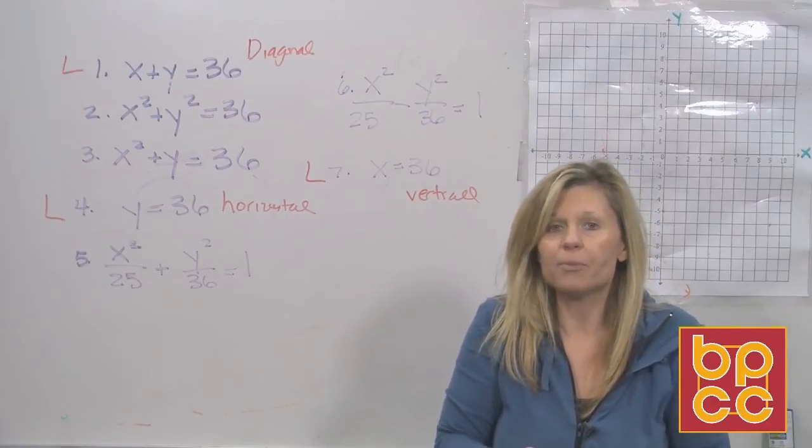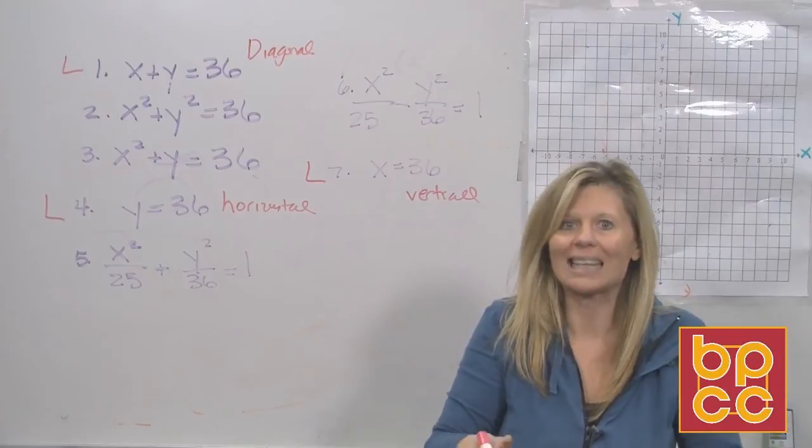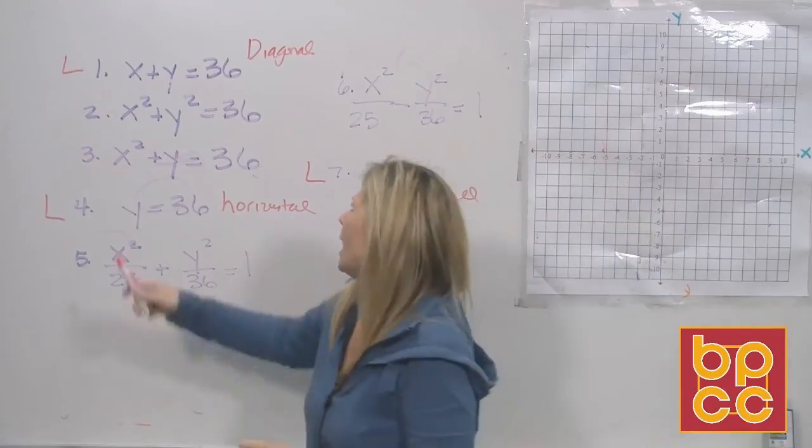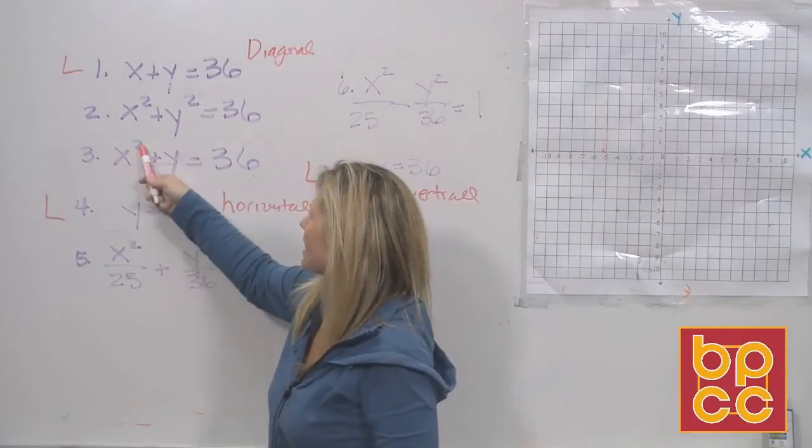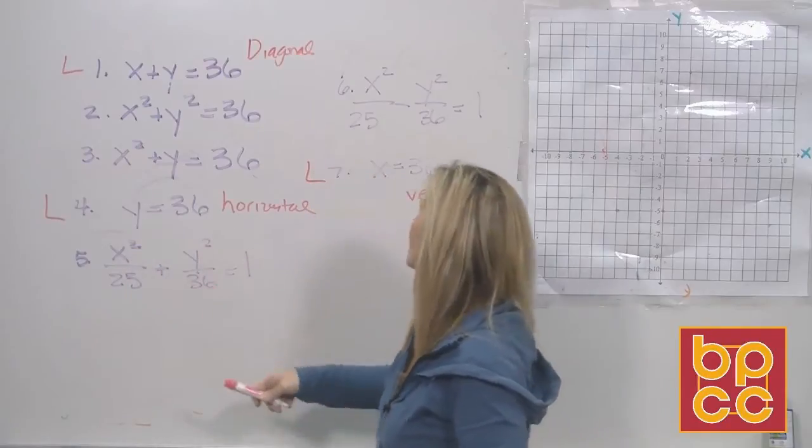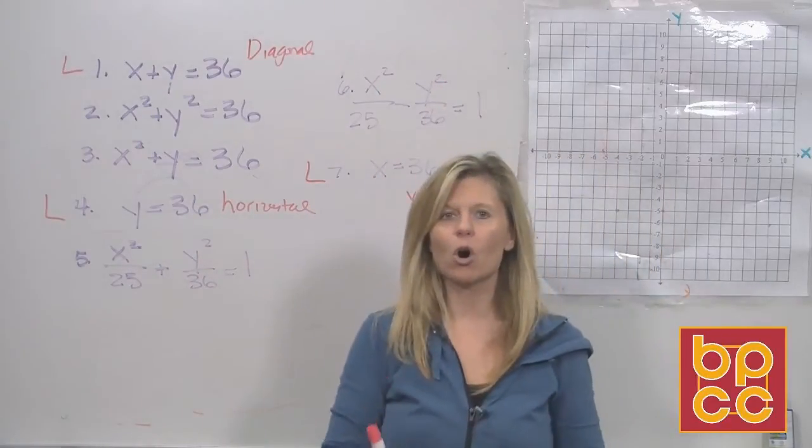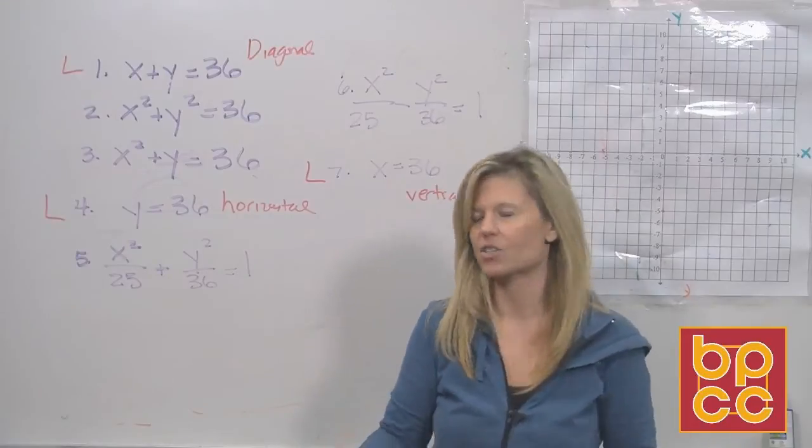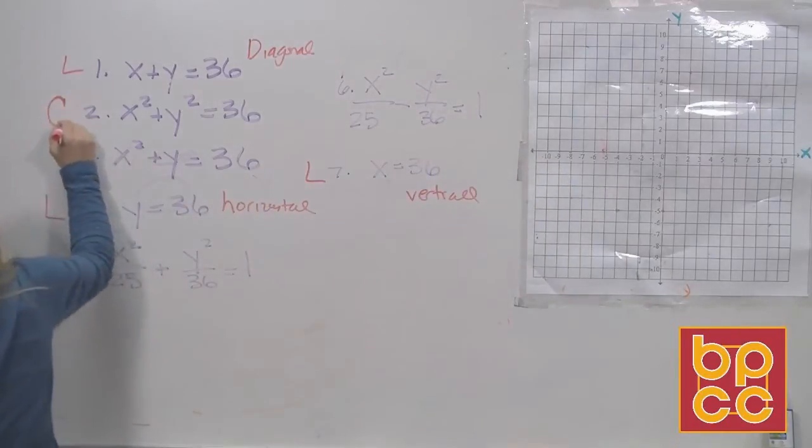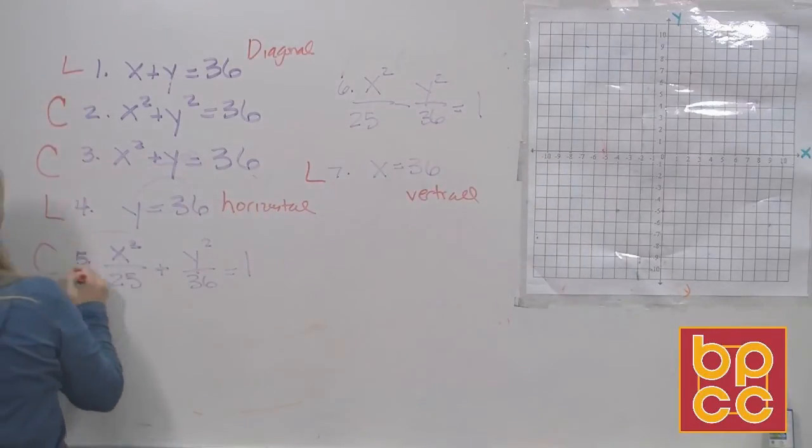We have up there four equations that are not linear. Has an X squared and a Y squared. Has an X squared. Has an X squared and a Y squared. Those are all equations of conics. That's our new word. These are all conics.